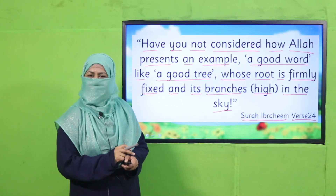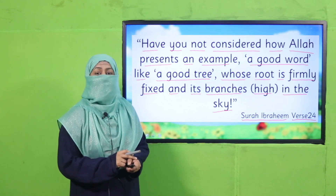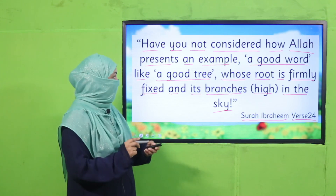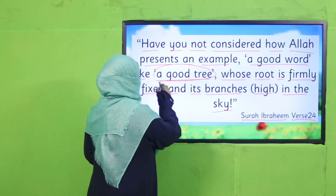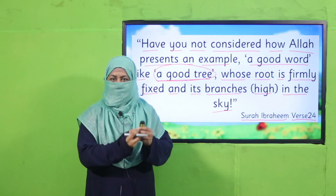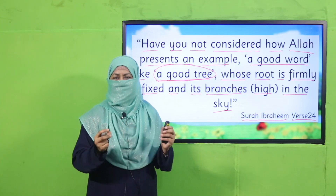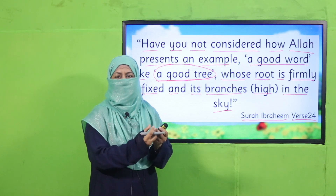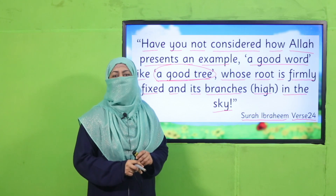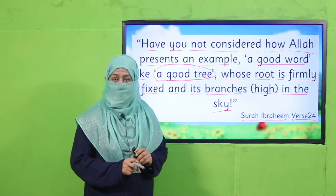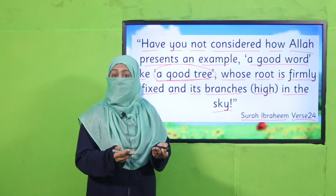Subhanallah, this is such a beautiful verse and example. Allah is telling us a beautiful word is just like a good tree — a tree which has its roots, its stem, and its branches. Similarly, a word has different letters joined together. And one thing which is really important: every word should be a good word, pronounced clearly. To pronounce clearly, we should know how to say it correctly.